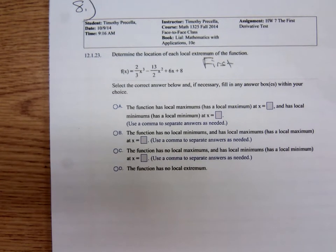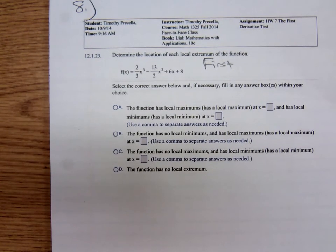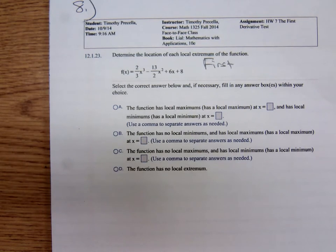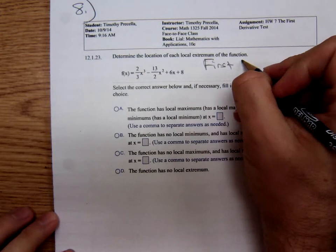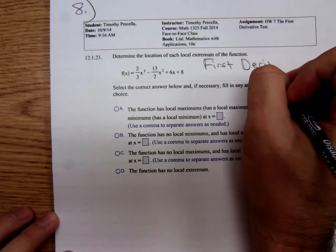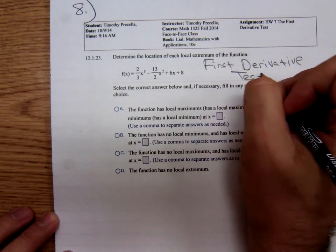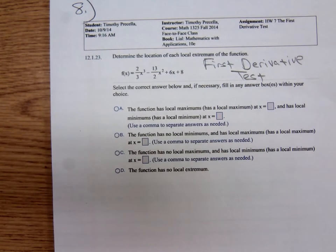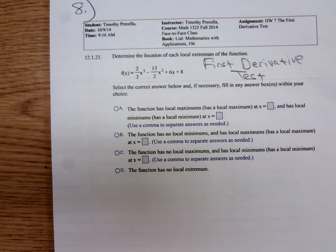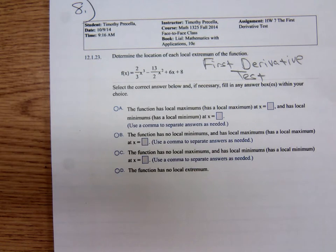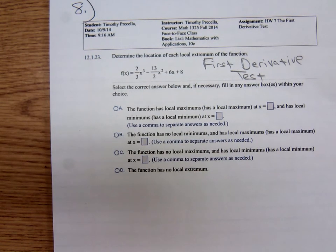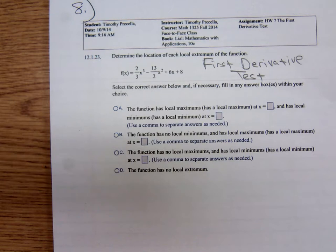Hi, I'm Timothy Bricella. My Math 1325 class and I are about to do a problem using the first derivative test. The function f of x equals two-thirds x cubed minus 13 halves x squared plus 6x plus 8.